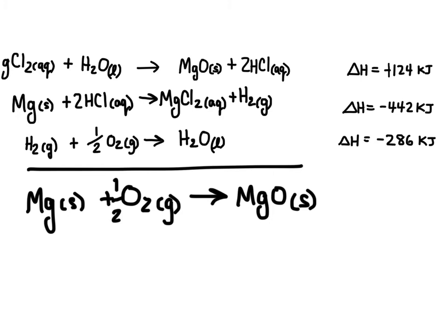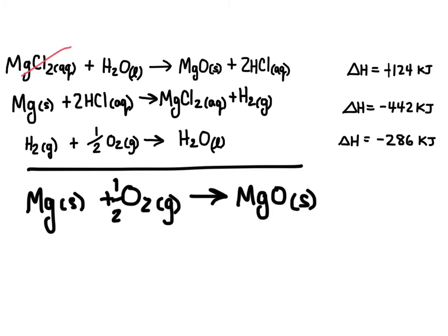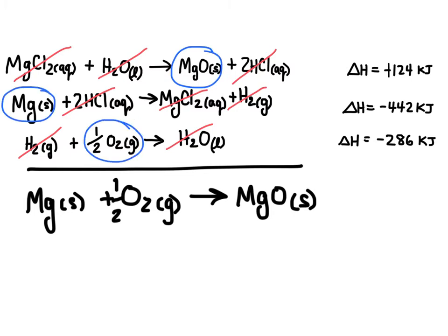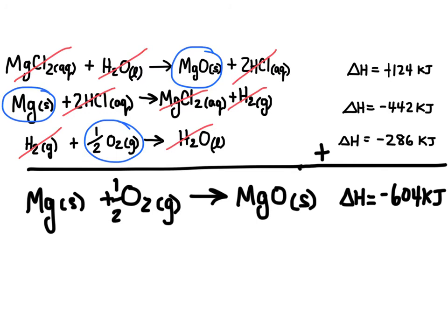Now checking for cancellations: magnesium chloride appears on opposite sides and cancels, water appears on opposite sides and cancels, hydrogen cancels, and hydrochloric acid cancels. I'm left with magnesium oxide, magnesium solid, and O2 gas — exactly what I want. Adding the enthalpies: positive 124 plus negative 442 plus negative 286 gives an enthalpy change of negative 604 kilojoules. The negative sign confirms this is highly exothermic, releasing a large amount of energy.